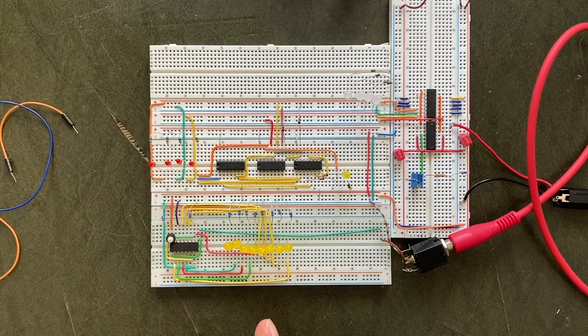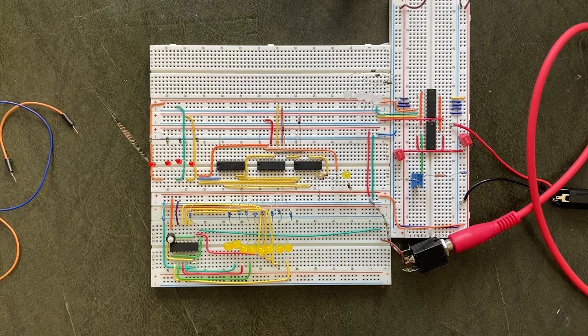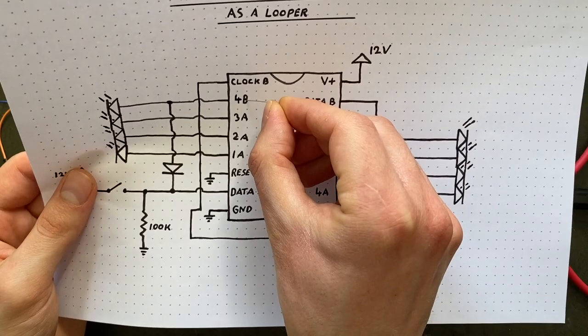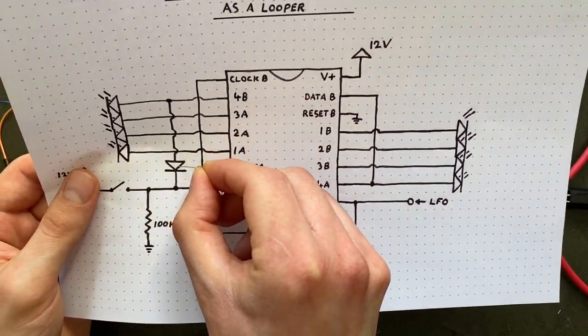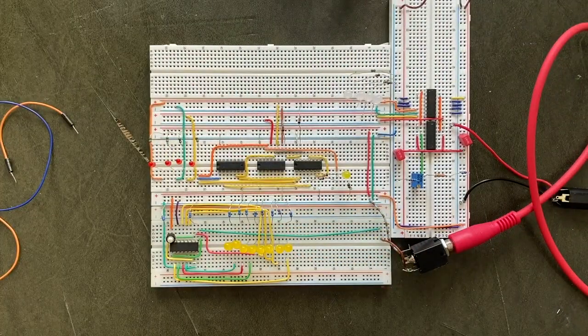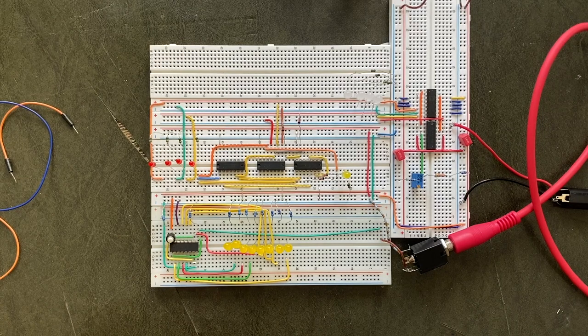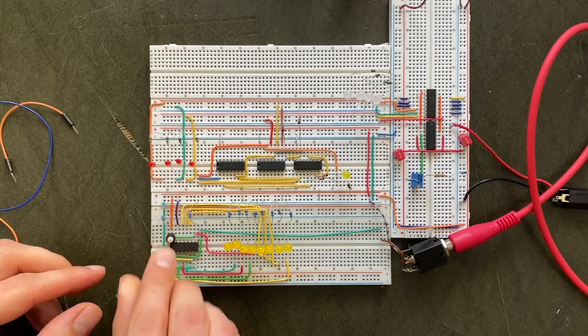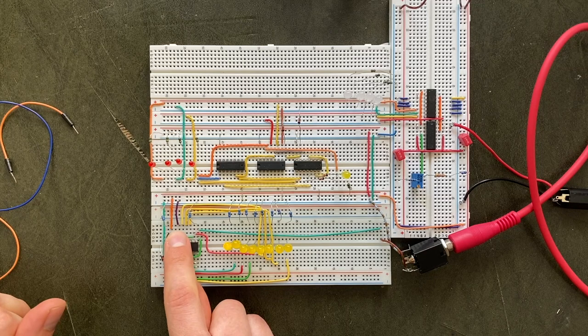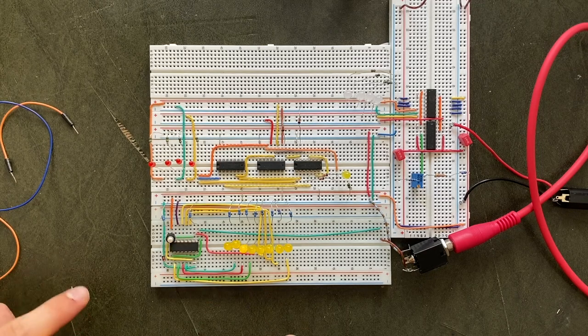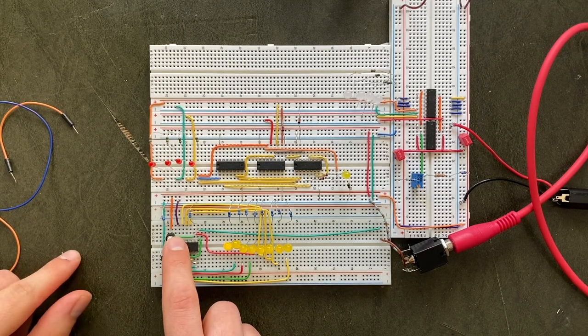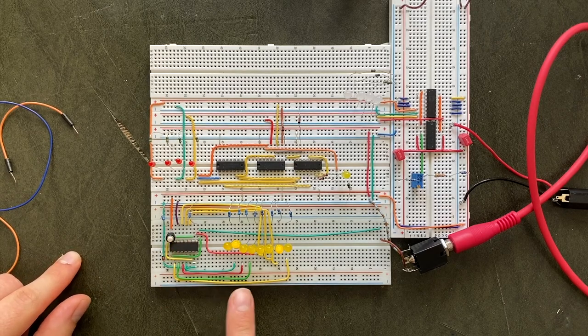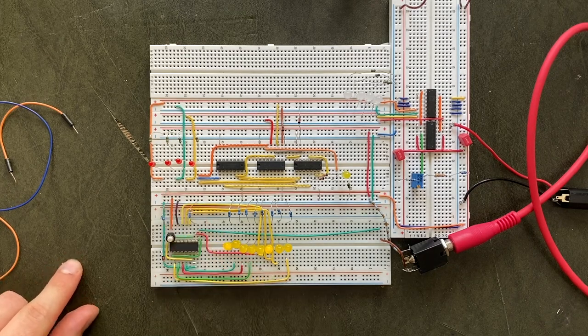But where it gets useful is when we turn the whole thing into a looper. To make that happen, we connect the second register's last output to the first register's data input through a diode. Now if I send in a bit, you can see it circling through the register. You can of course add more. And now what we can do is pick four of the shift register's outputs and connect them to our processor.